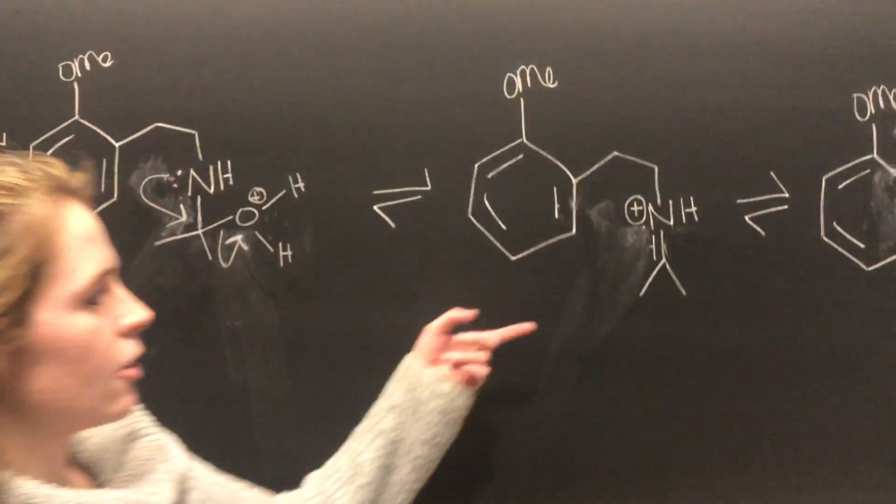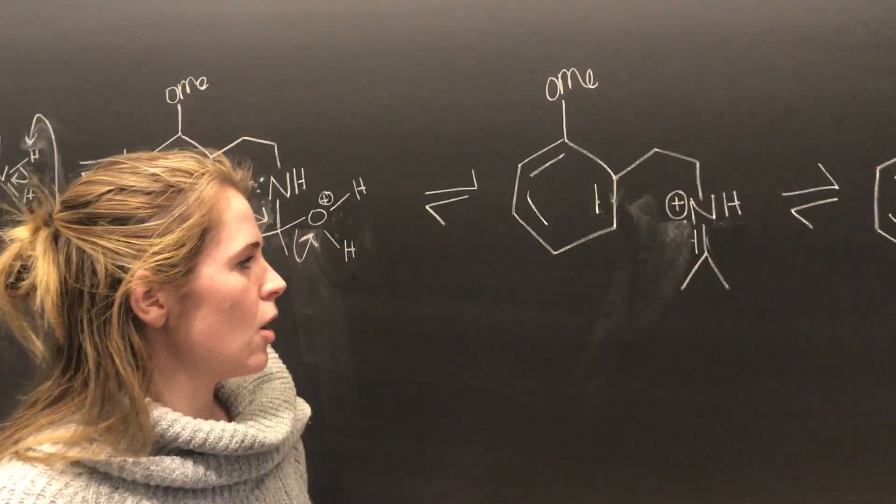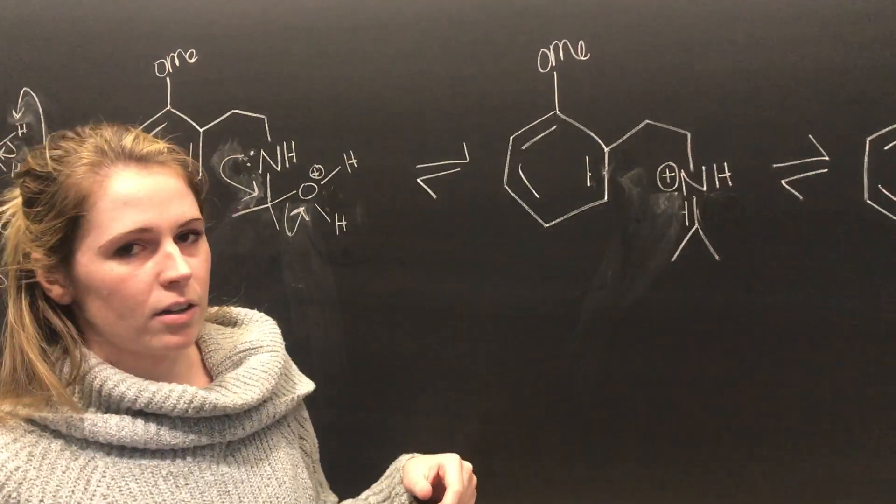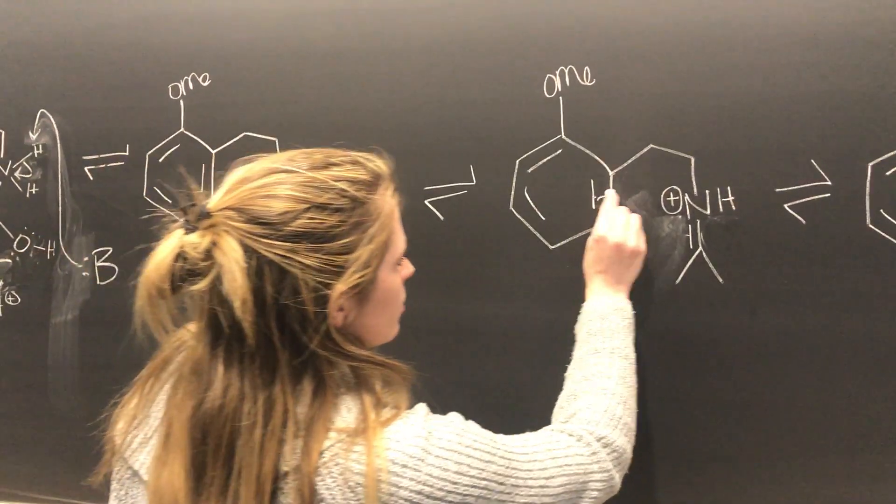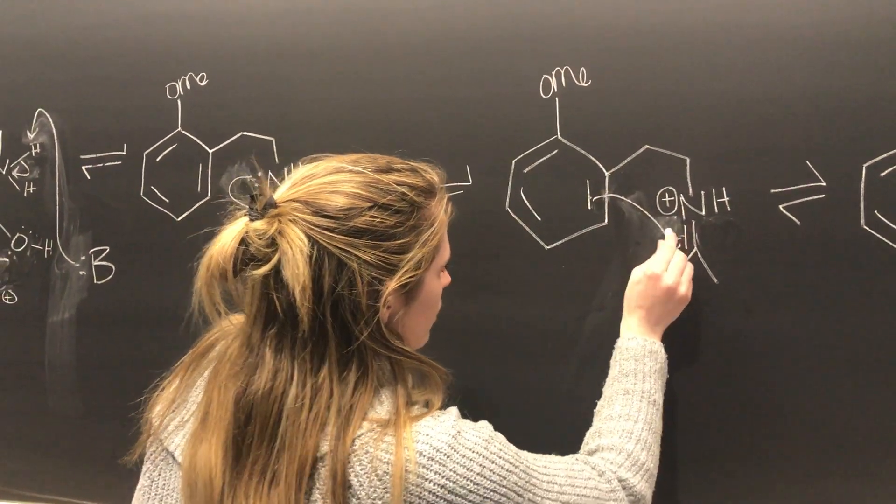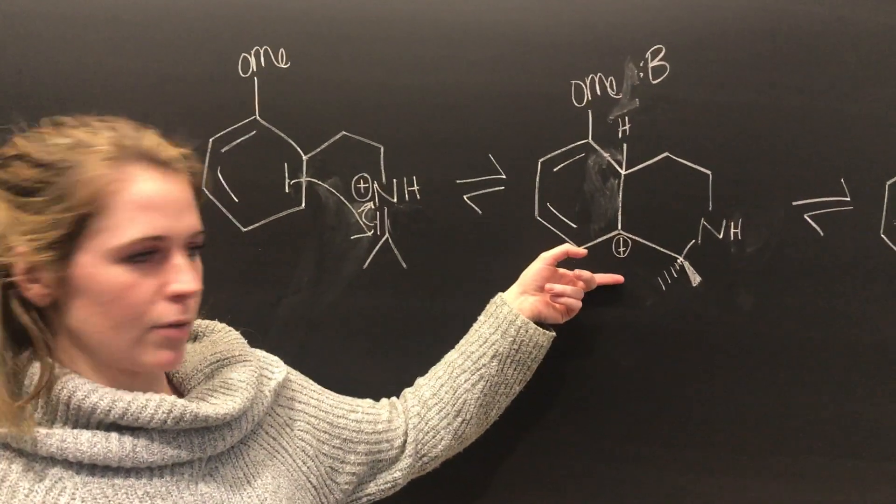Then you get the key intermediate to this reaction, which is this iminium, which becomes a very good electrophile, and that allows for an intramolecular attack which forms this six-membered ring.